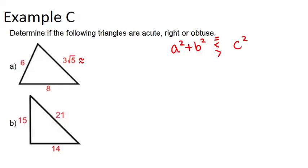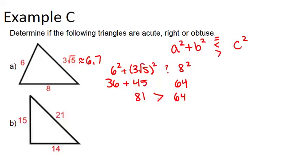So let's do a first, and first let's figure out approximately what 3 root 5 is, so that we can know which side should be the hypotenuse. So 3 root 5 is approximately 6.7 using our calculator, so that won't be the potential hypotenuse. What we're going to do is test 6 squared plus 3 root 5 squared, and see how that compares with 8 squared. So 6 squared is 36, 3 root 5 squared is 45, and 8 squared is 64. 36 plus 45 is 81, and 81 is greater than 64. So because a squared plus b squared is the greater side, this is an acute triangle.